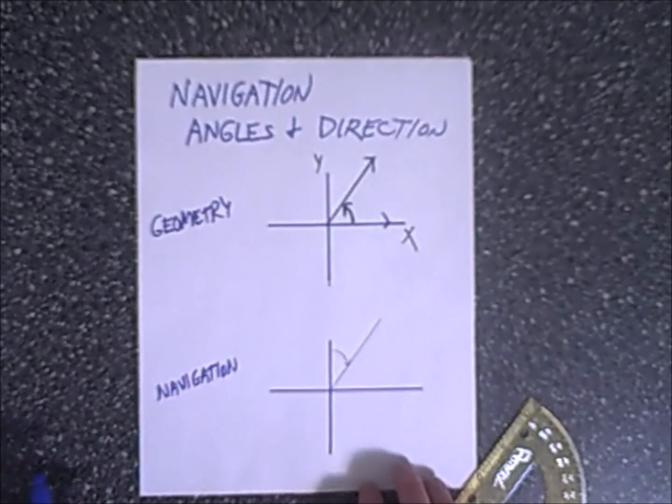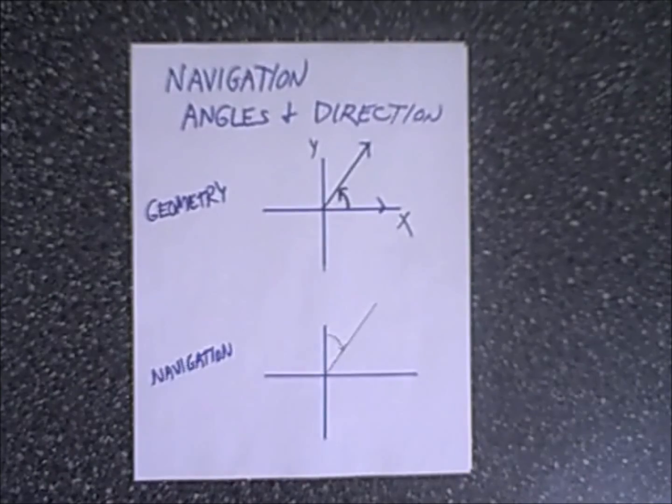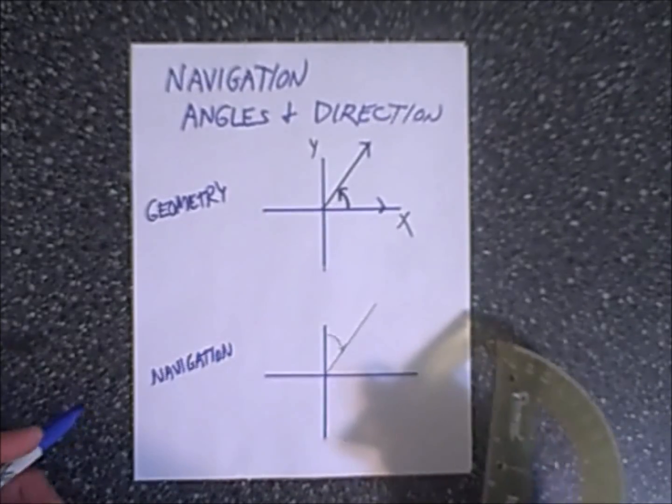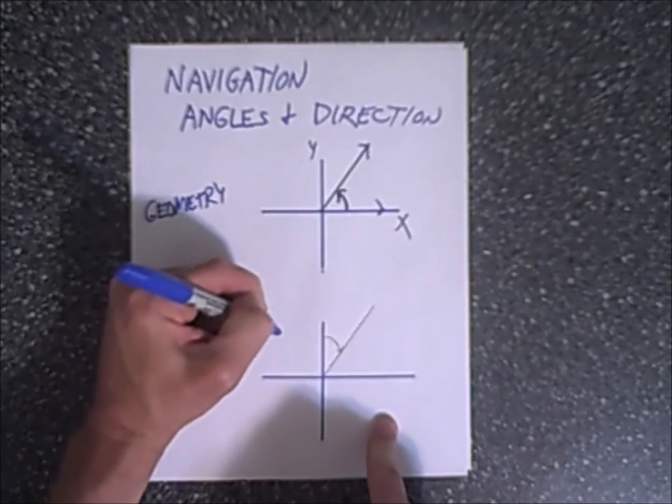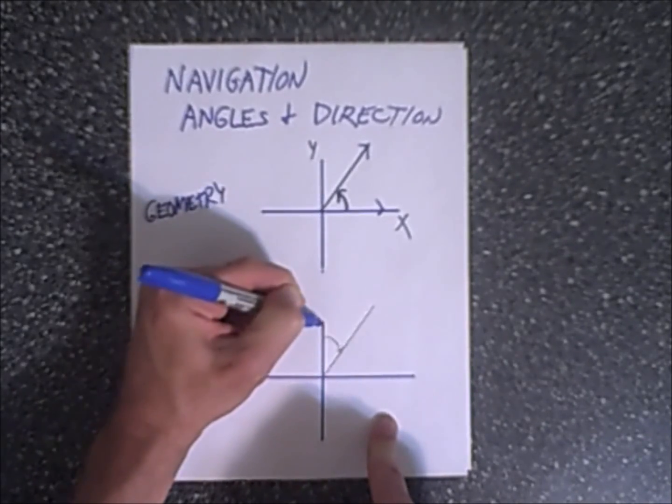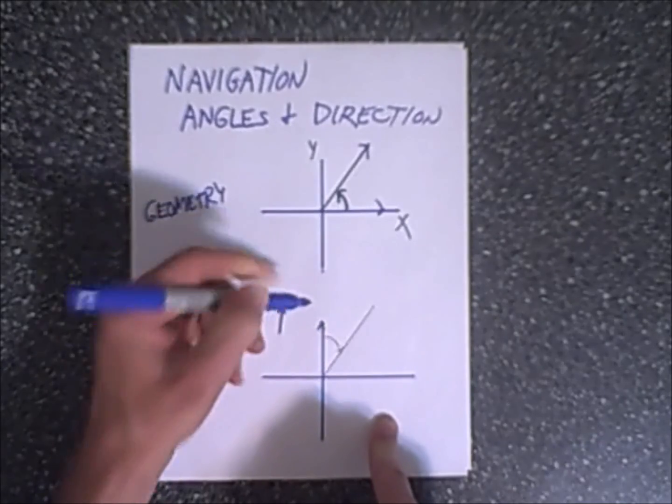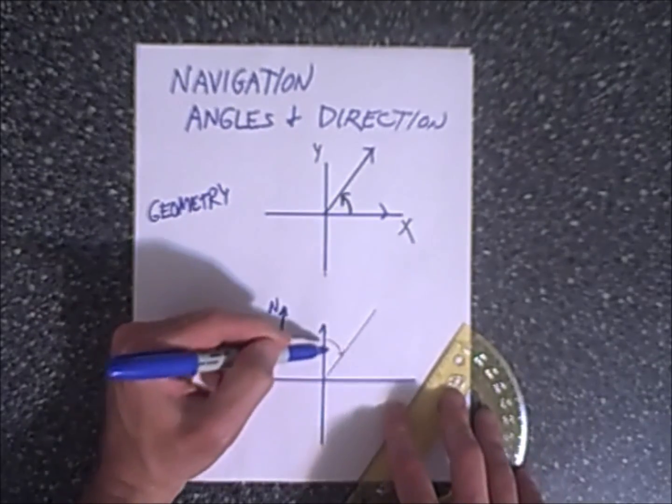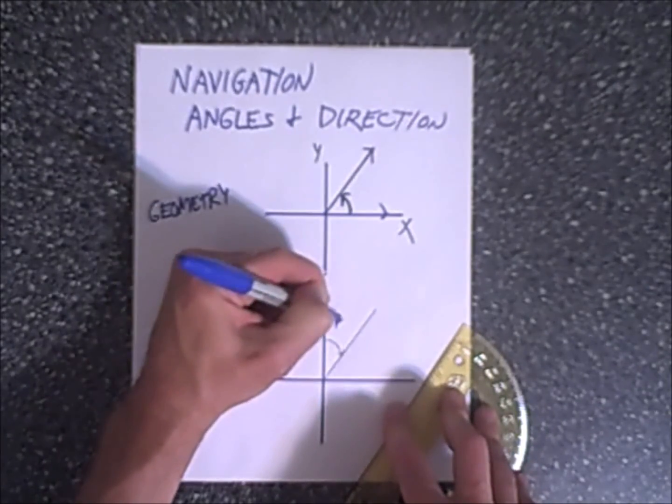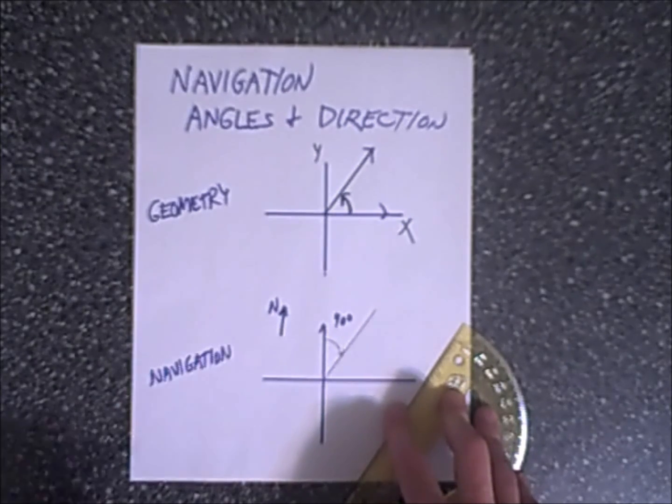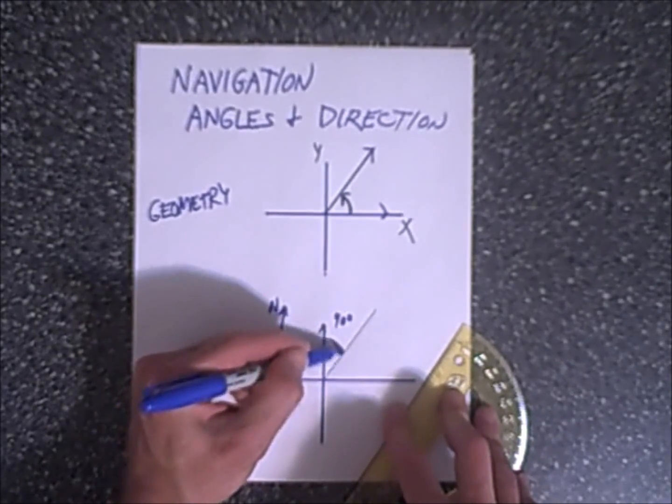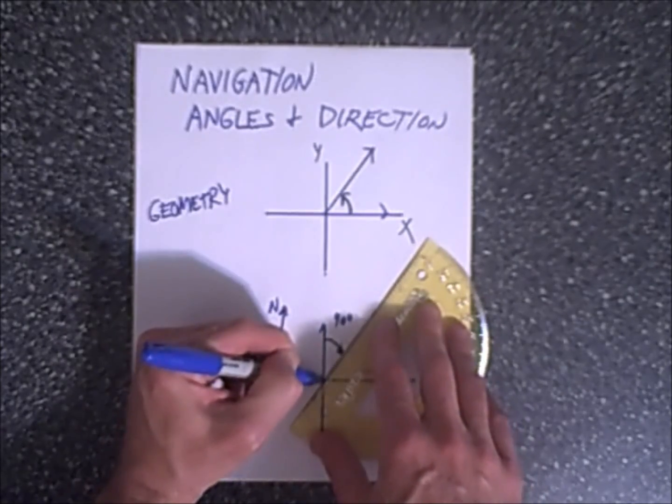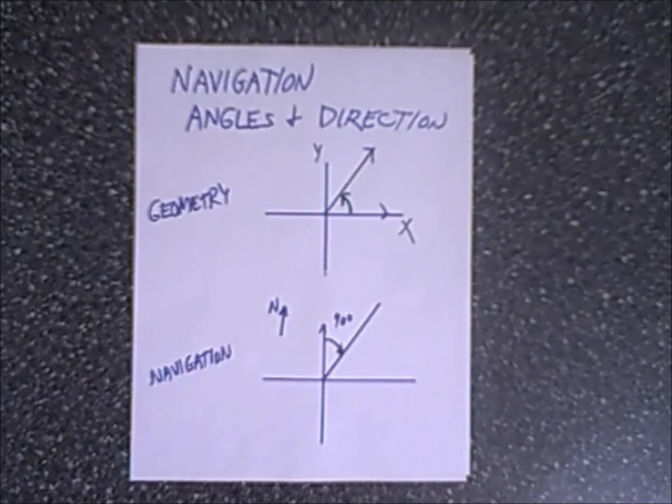This is not what you do in navigation. Navigation, you start at what they would call the y-axis, but really what it is is north, and north is zero. You start at north, so if you were to draw an angle of, let's say 40 degrees, a bearing of 40 degrees, you would start at north which is zero and you'd move clockwise and you would end up with an angle that looks like that.